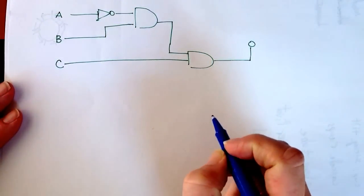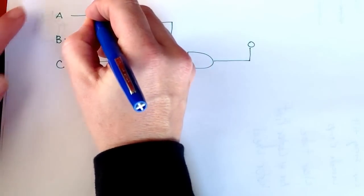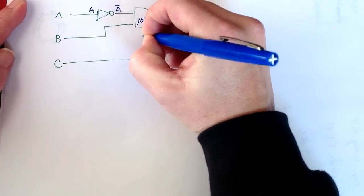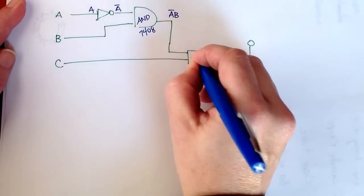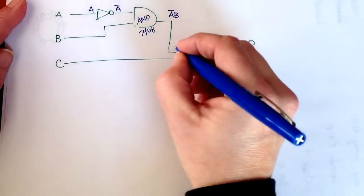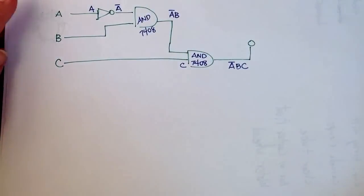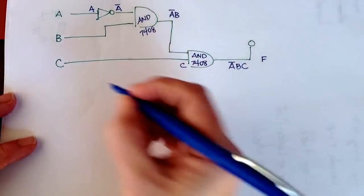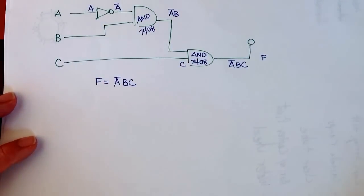In this example I've sketched out a logic circuit and I want you to look at how we go about first determining the expression and then the truth table. I have three inputs A, B, and C. A goes in here and I follow it through — this becomes NOT A. This is an AND gate, a 7408, so this expression becomes NOT A AND B. Then another AND gate, also a 7408, and coming in we have NOT A AND B here and C, so the output is NOT A AND B AND C. If we call that output F, we write F = NOT A AND B AND C.